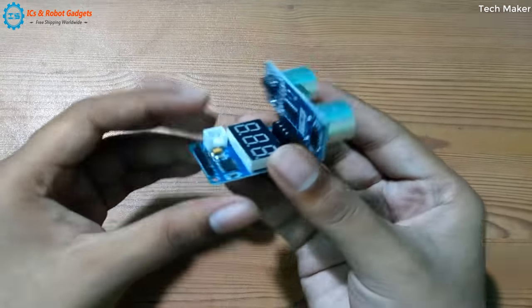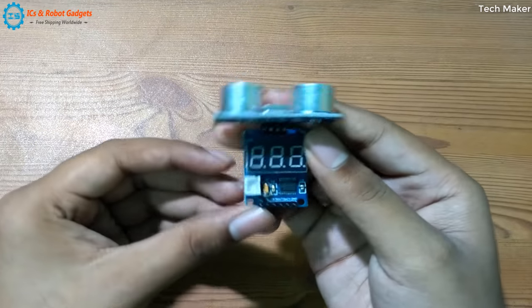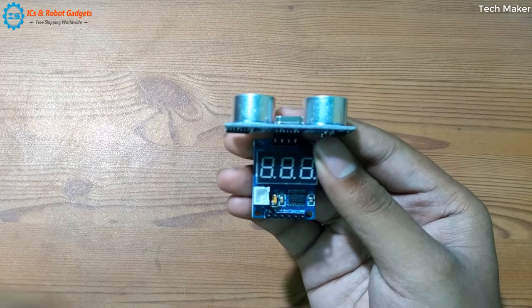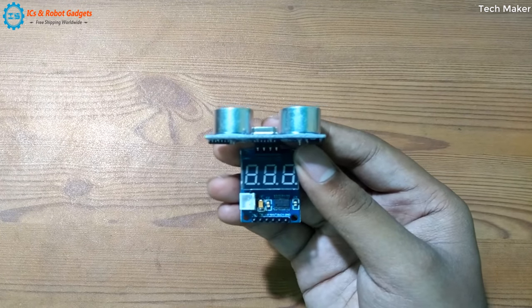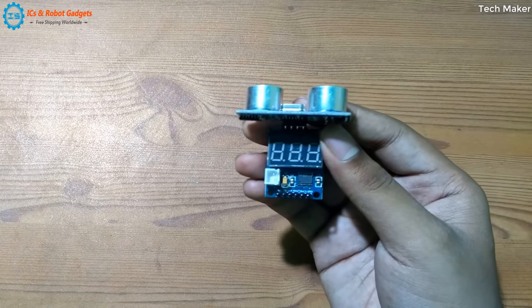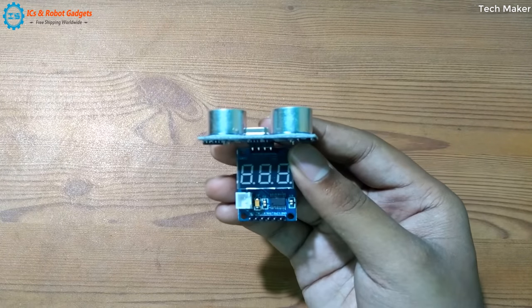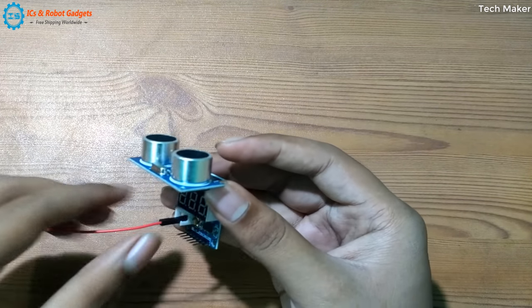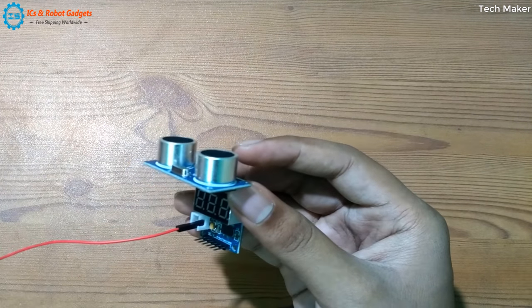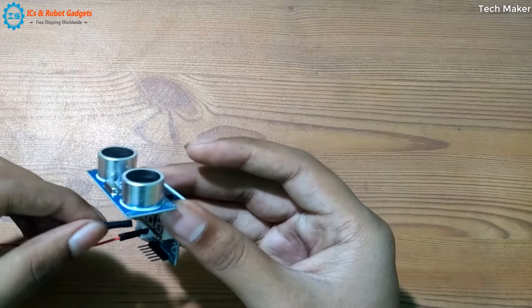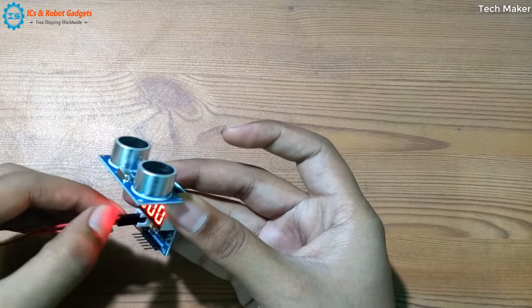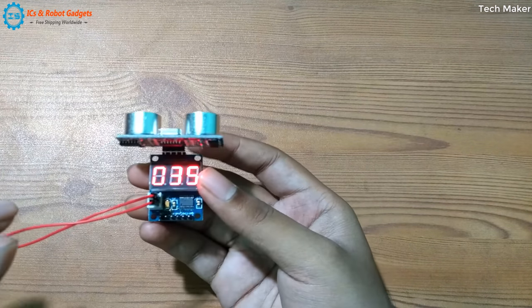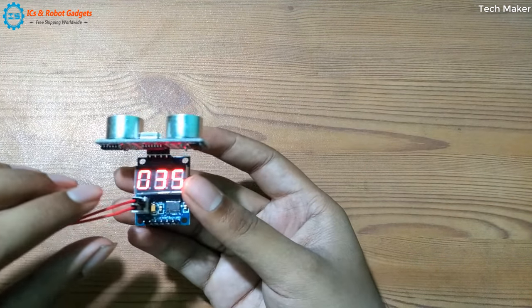Now we can provide power supply to this. Here the first pin is VCC and the second pin is ground. So first I will connect the ground, then VCC. You can see here the display is lit, the light is very bright.